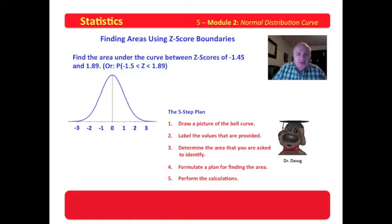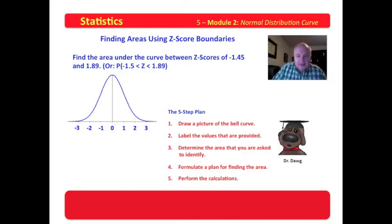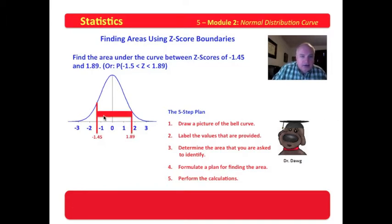Find the areas under the curve between Z-scores of negative 1.45 and a Z-score of 1.89. Find the probability that Z lies between negative 1.45 and 1.89. The five-step plan is to draw a picture — you can see that I've drawn the stinking picture — label the values that are provided, determine the area that you're asked to identify, formulate a plan to find the area, and perform the calculations. The areas that we're asked to find are between negative 1.45 and 1.89, and this is the area that we're asked to identify.